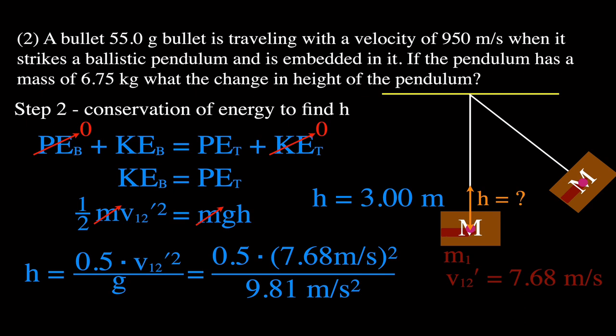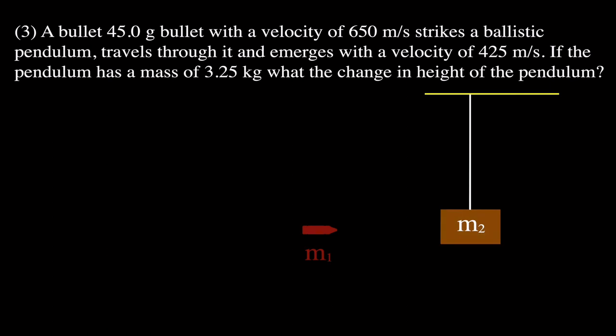In the first example we found the velocity, and in the second we found the height. Now for one more problem: we have a 45-gram bullet moving at 650 meters per second that strikes the pendulum but in this case travels straight through, losing some energy. It emerges with a velocity of 425 meters per second. The pendulum has a mass of 3.25 kilograms. We want to know the change in height of the pendulum.